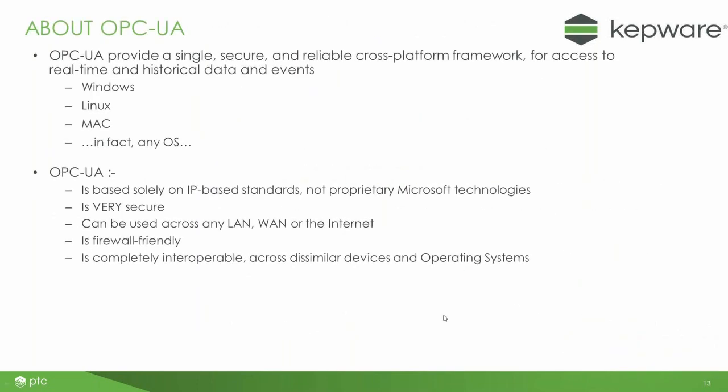OPC UA, in contrast, is a standard which is not based upon Windows. It's based upon IP connections only — it's a routed way of doing things. You can pass OPC UA data across any routed network between devices with many different operating systems: embedded devices, Windows devices, Linux devices. It's extremely secure. You can use it across local networks, wide area networks, or across the internet. Because it's based upon IP, you can route it between anywhere and anywhere. It's very firewall-friendly — you can use a single port and you can decide what port that is. It works across lots of different devices and systems, so it's extremely flexible and secure.